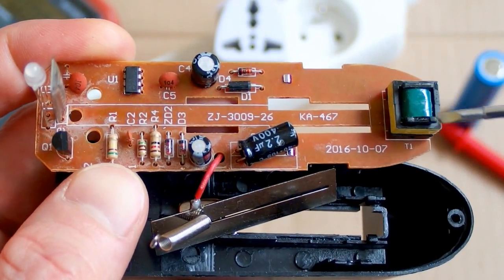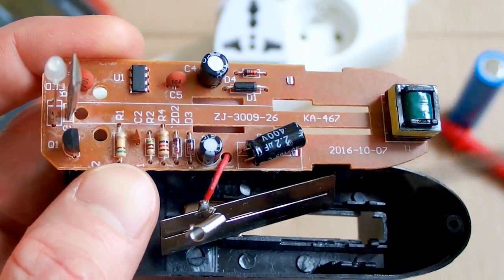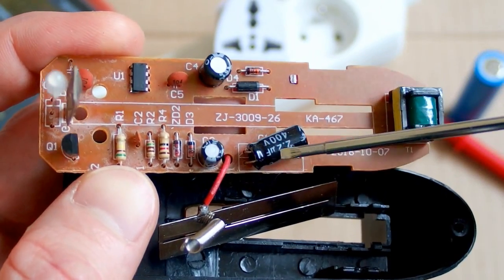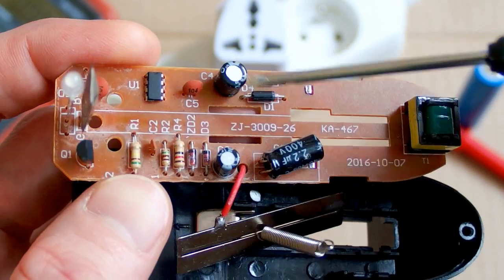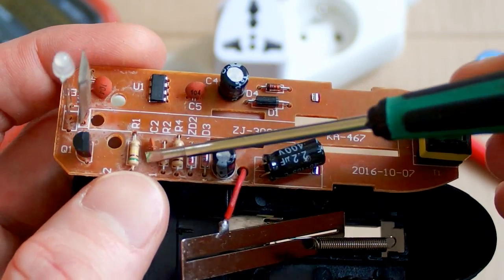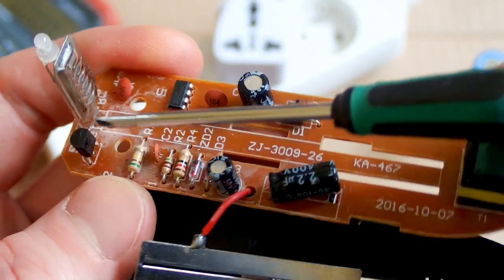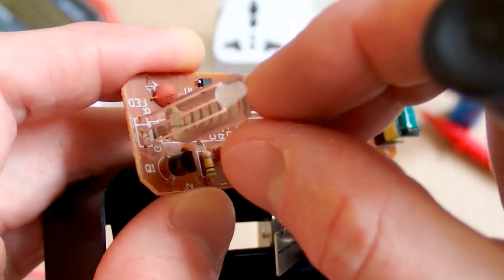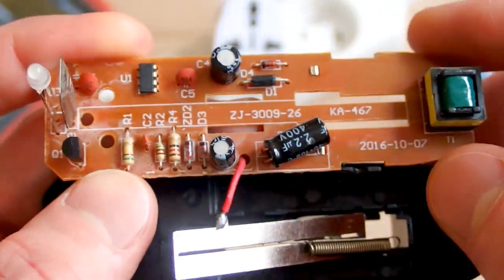And this is the other side of the board. Here you can see a tiny transformer, the main capacitor, another two capacitors, some diodes, resistors, some transistor, the contact, three pin LED, and that's basically it.